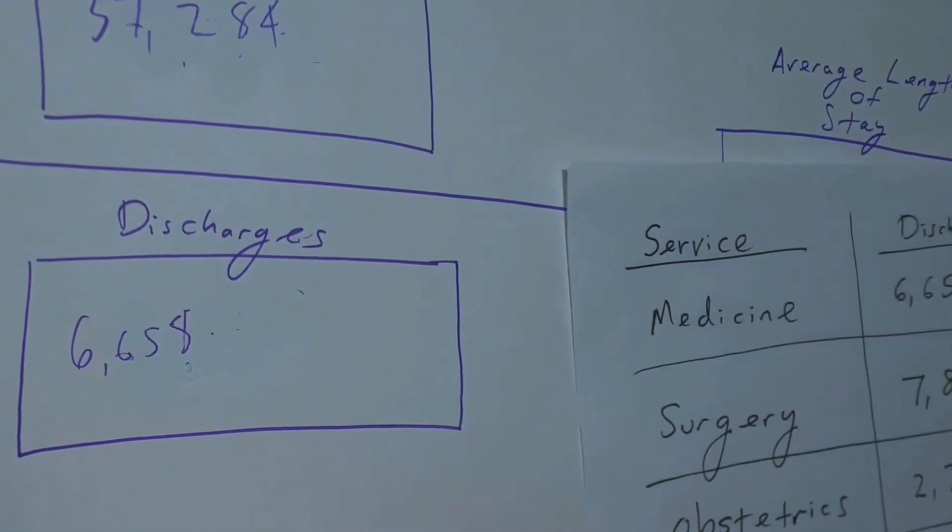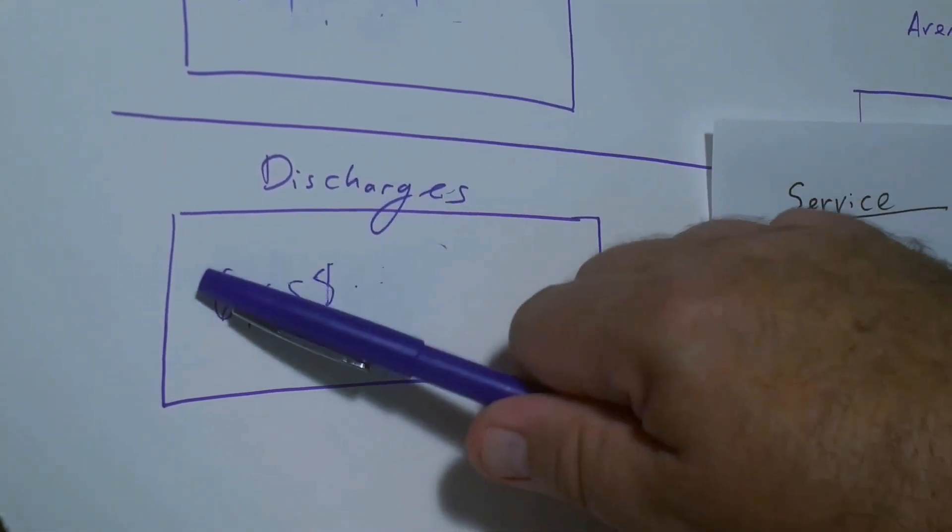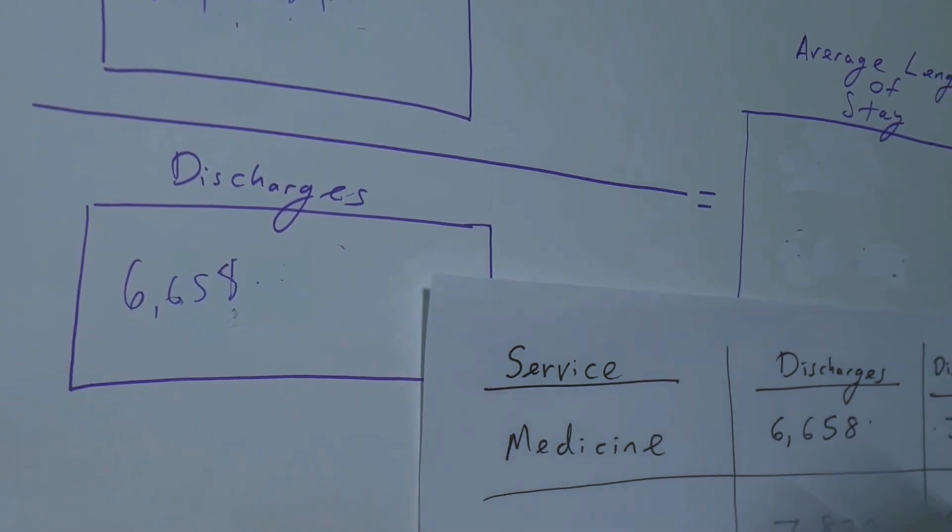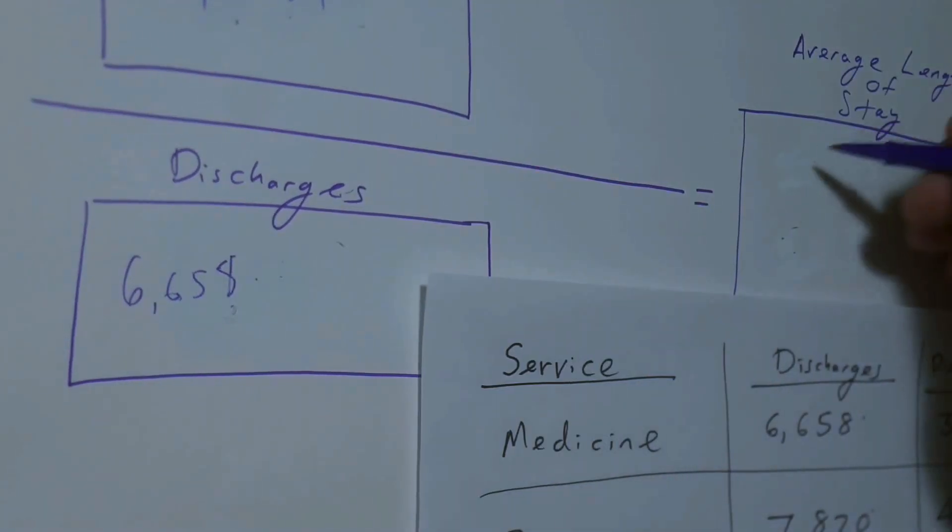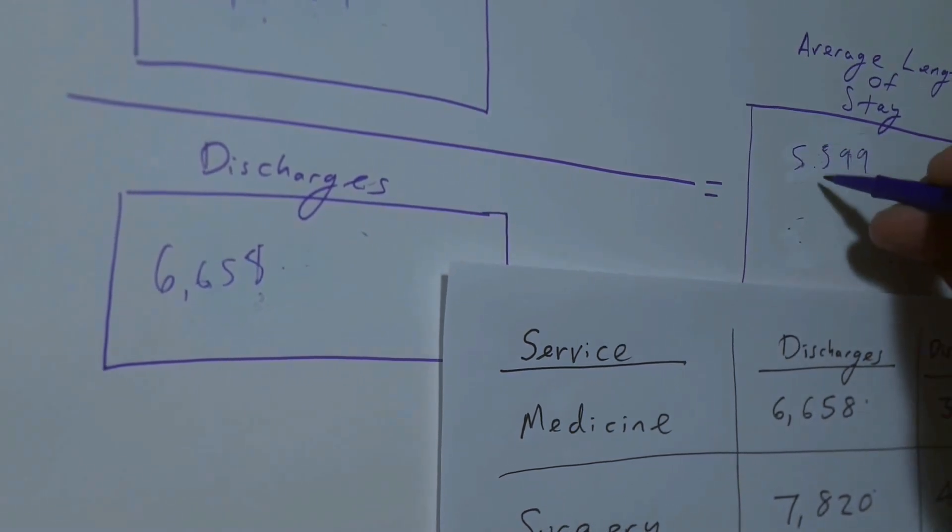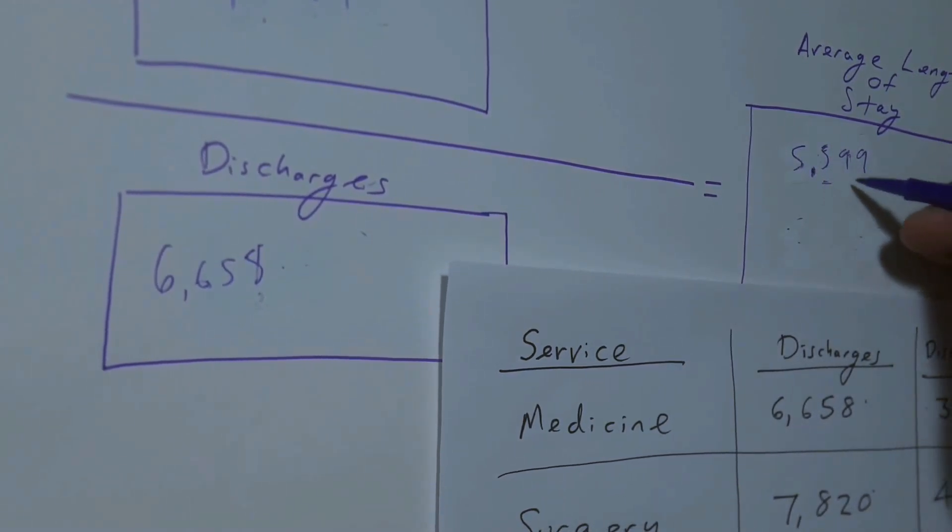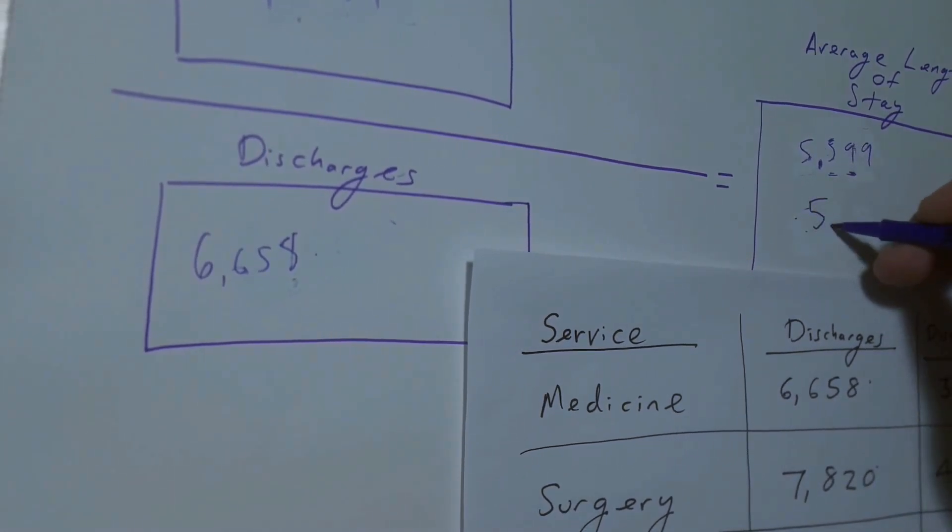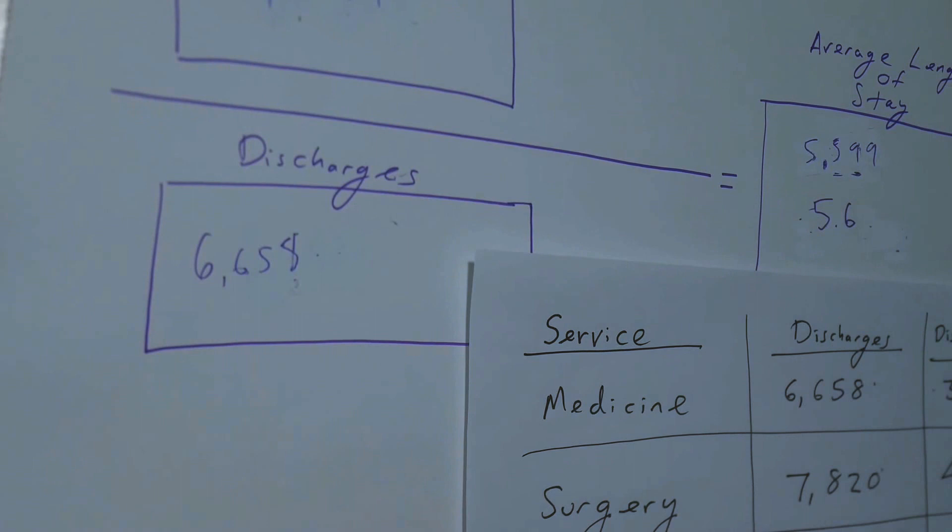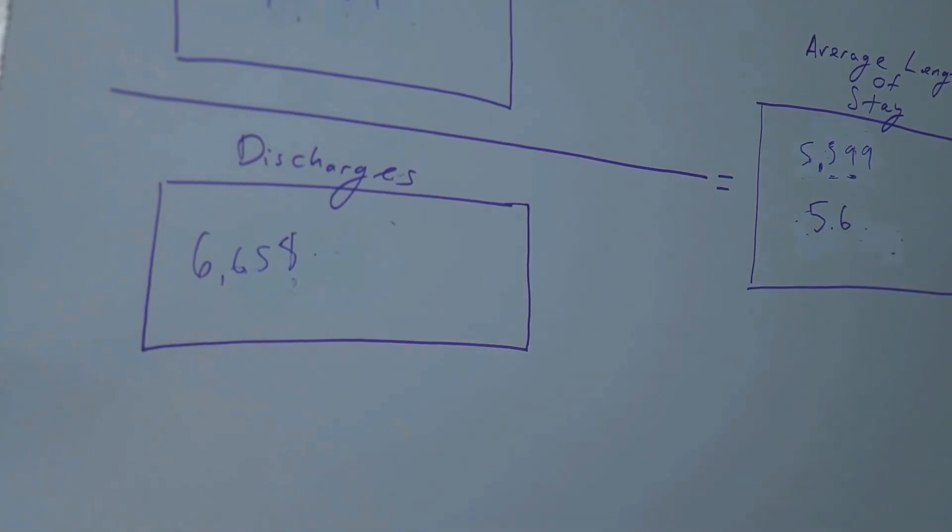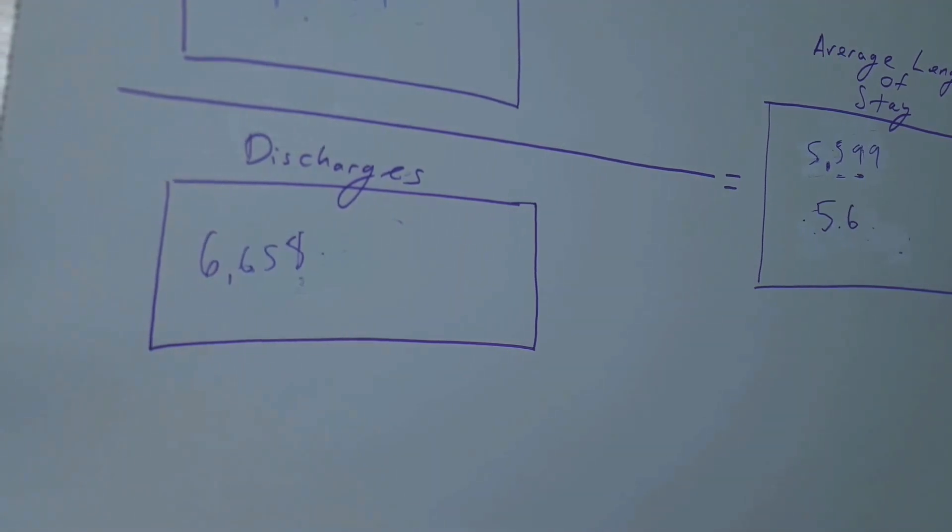You go ahead and divide the 37,284 by the 6,658, and that gives us a number that is 5.599. If we round that, and since this 9 is above 5, it becomes 5.6. So the average length of stay for the medicine service is 5.6 days. That's how you calculate it for that.